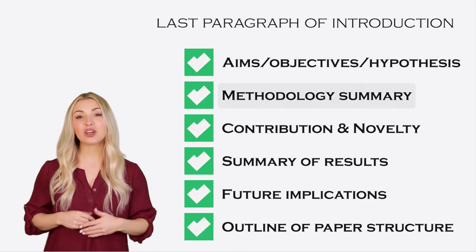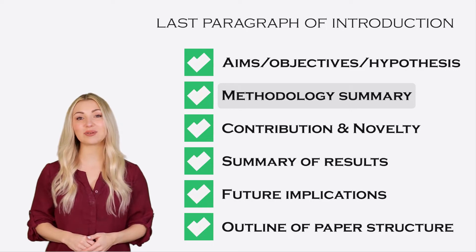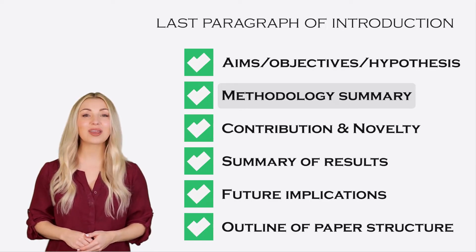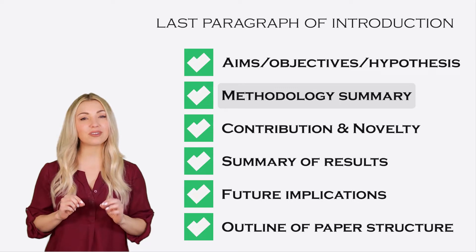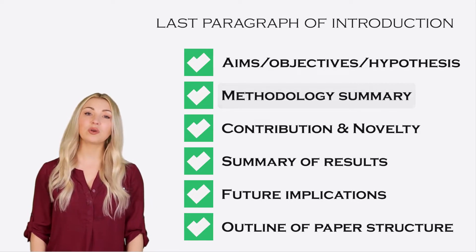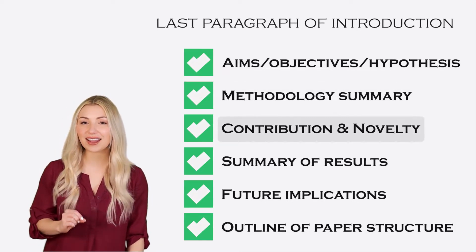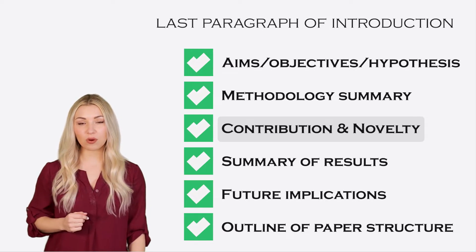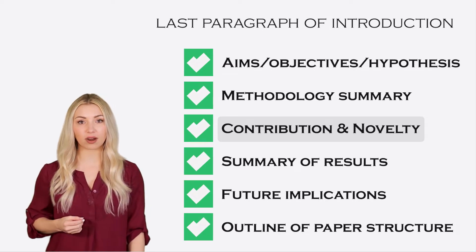Then you need to tell your readers how you are planning to achieve your aims and objectives. You can do this by providing a brief summary of your methodology. Then you can talk about the originality of your work and explain how your work differs from previous work.